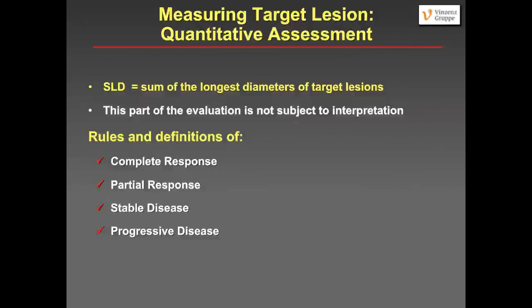We measure the longest diameter and add up the longest diameter of all target lesions, which is called the Sum of Longest Diameters. This should not be subject to interpretation. According to the SLD, we evaluate the tumor and say whether this is complete response, partial response, stable disease, or progressive disease.